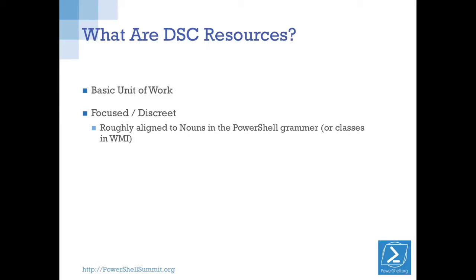You can build resources that make a lot of assumptions and are locked into a particular workflow, but they're only going to be useful in that one particular scenario. That's why if we make them very discrete, we can build and compose these things up — and that's where composite resources come in. We can provide common groupings of resources, but we want our actual resources to be very, very fine-grained and very specific.